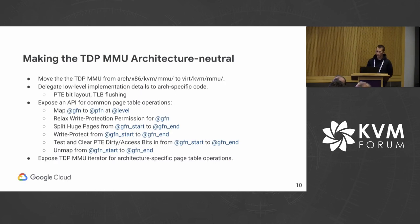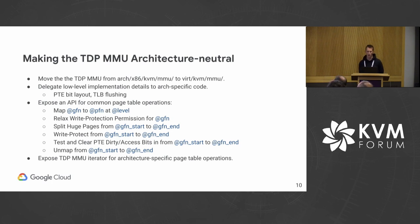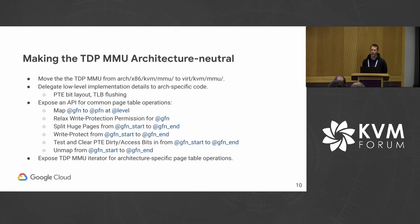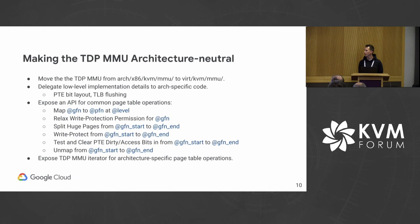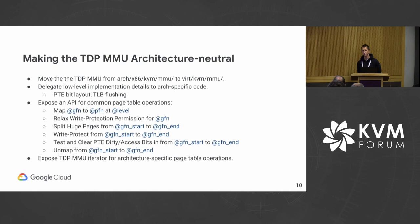What if we could make the TDP MMU in x86 architecture-neutral and move the code from the x86 directory into an architecture-neutral directory? When we do this, the only thing we need to delegate to the architecture-specific code is the low-level details like the layout of the page table entries and how to implement an actual TLB flush. We can then expose an API for common operations like fault handling — mapping a guest address to a physical address at a given level, relaxing write permissions for a given guest address. We can also expose the TDP MMU iterator, which is the basic data structure that all TDP MMU page table operations are implemented with, making it available for architecture-specific page table operations.